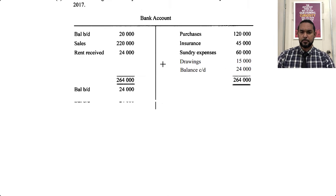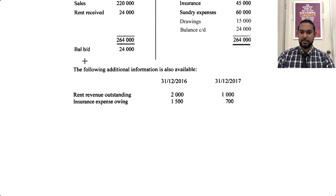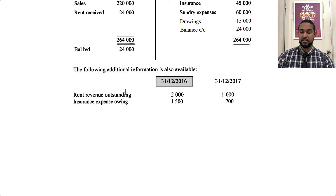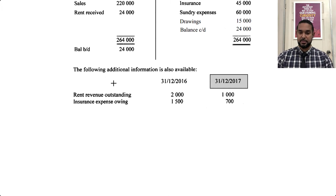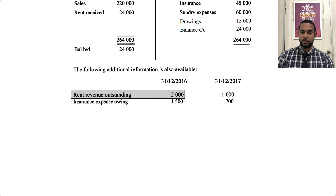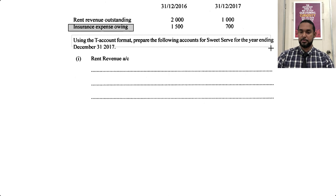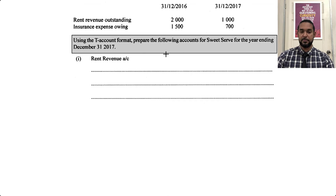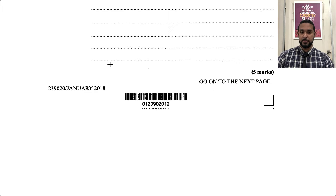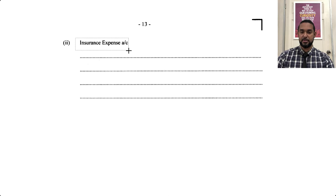So we have some extra information down here. It says the following additional information is also available — 31st December 2016 and 31st December 2017. Those are clearly the opening and closing balances for rent revenue outstanding and insurance expense owing. So they want us to use T-accounts to prepare the following accounts for Sweet Serve: the rent revenue account and the insurance expense account.